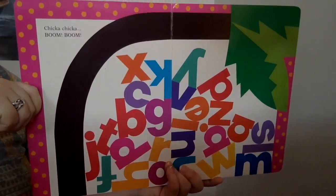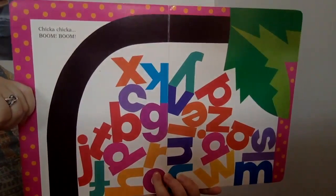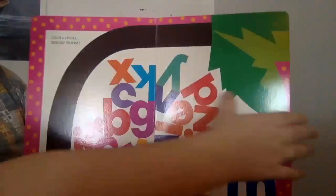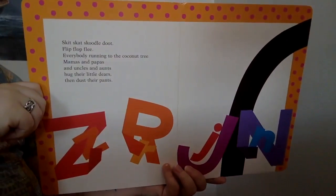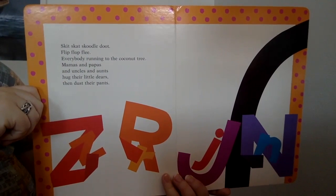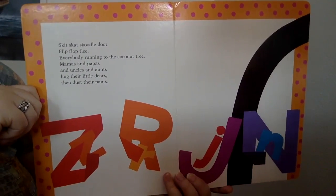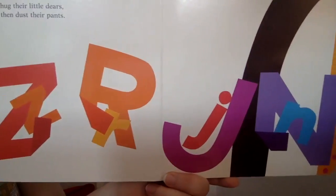Chicka Chicka Boom Boom. They all fell out of the tree. Ouch. Skit-skat, scoodle-doot, flip-flop, flee. Everybody running to the coconut tree. Mamas and Papas and uncles and aunts hug their little dears and dust their pants. Their grown-ups are checking on them.